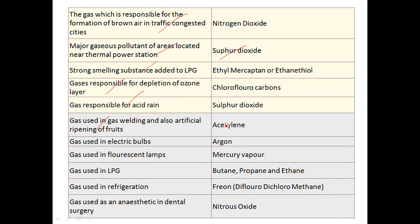The gas used in electric bulbs is argon. The gas used in fluorescent lamps is mercury vapor.